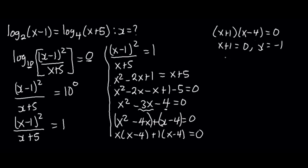From (x plus 1)(x minus 4) = 0, we get x plus 1 equals zero, hence x equals negative 1, or x minus 4 equals zero, hence x equals 4. Now we test these values. If x equals negative 1, we get log to the base of 2 of negative 2, and log to the base of 4 of negative 2. The logarithm of a negative number does not exist, so x cannot equal negative 1 and this solution is rejected.